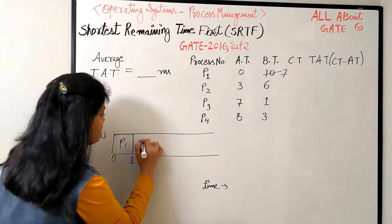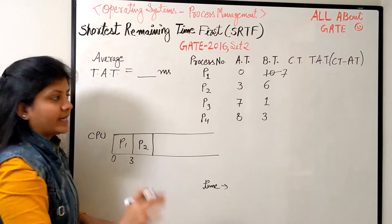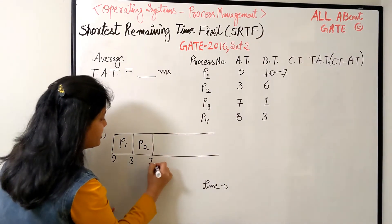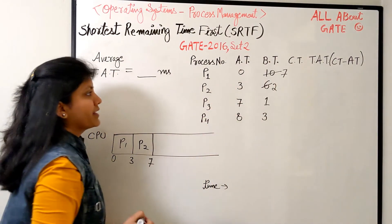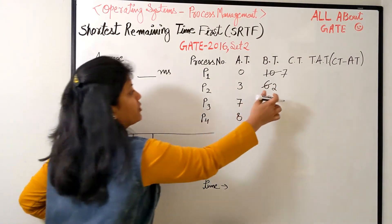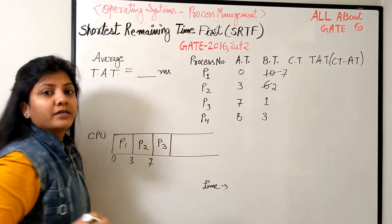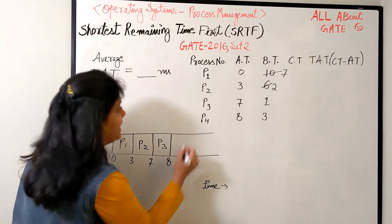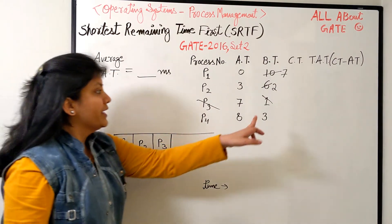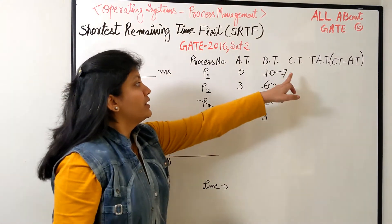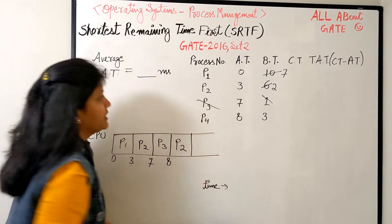P2 runs from three to seven - four bursts - and now needs two remaining. By time seven P3 arrives. Among P1 with seven remaining, P2 with two remaining, and P3 with one, P3 is clearly smallest. So P3 schedules from seven to eight and finishes. By time eight, P4 is also in the system.